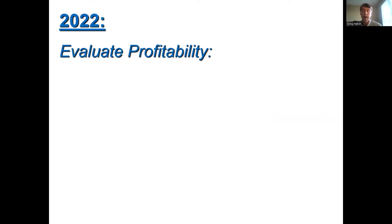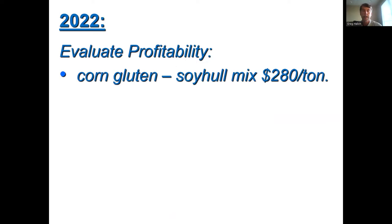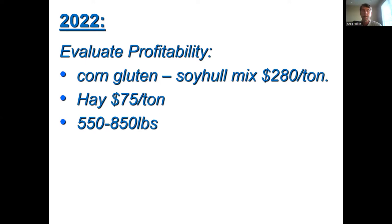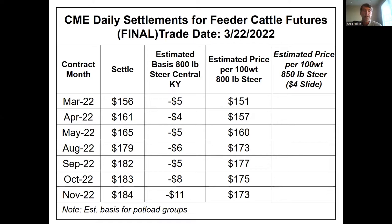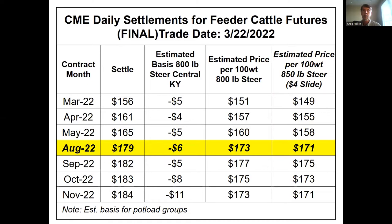Now we're going to start with backgrounding and then go into stocker situations. For the backgrounding scenario, I'm assuming a 50/50 corn gluten/soy hull mix — roughly half the diet at $280 per ton — and the other half good quality hay at $75 a ton. We're going to start with a 550-pound steer, put on 300 pounds, take it to 850 pounds, and sell. Target sale date is August 1st. Average daily gain of 2.3 pounds per day means 130 days, starting March 23rd. So we're selling in August and will use the August futures and basis.